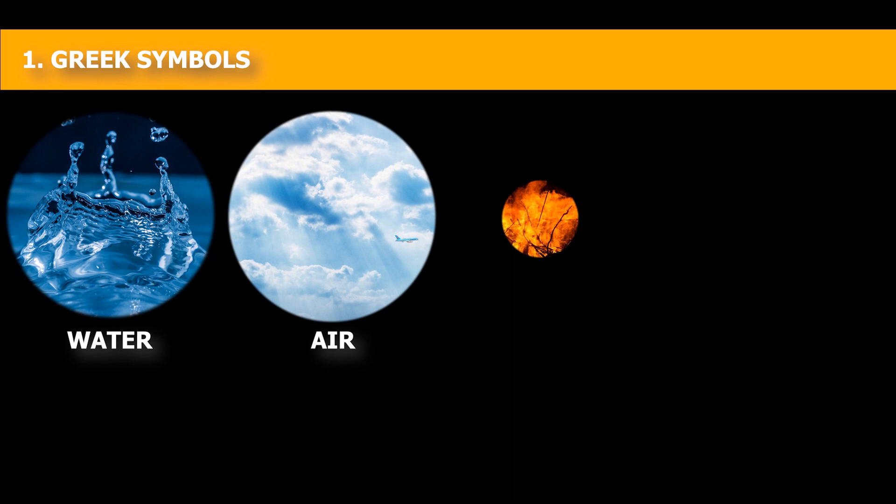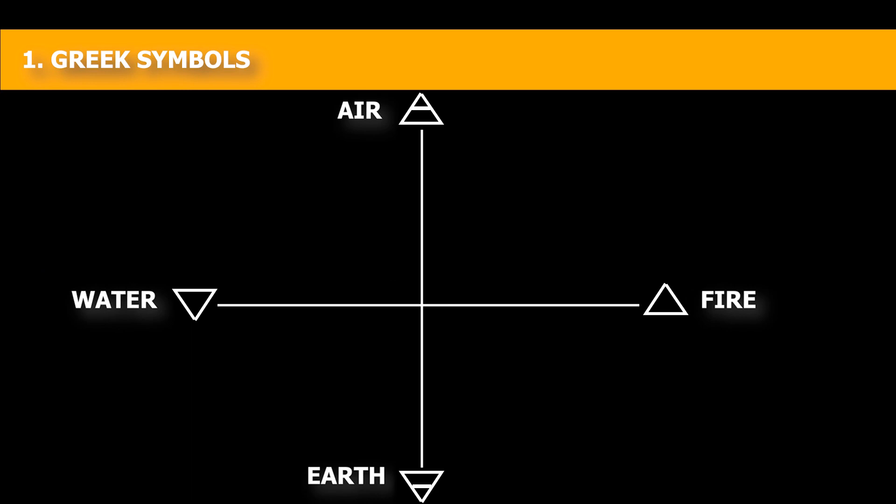They used geometrical symbols to represent them and combination of these symbols to represent intermediary matter. For example, moist things were represented using symbols of water and air. Warm things were represented using symbols of air and fire. Dry things were represented using symbols of fire and earth. And cold things were represented using symbols of earth and water.